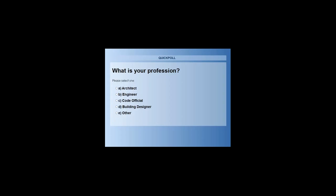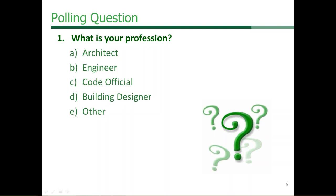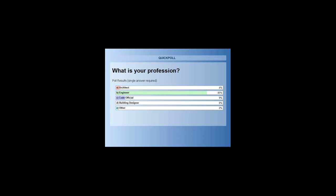The first poll question asks: what is your profession? Options are architect, engineer, code official, building designer, or other. Results show a few architects, the vast majority are engineers, 9% are code officials, no building designers, and a couple of others.